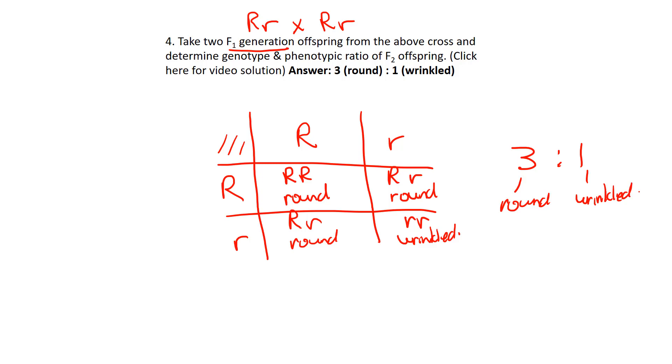So in a previous question or somewhere in the notes there, we talked about this is a very typical ratio when both parents are heterozygous in a monohybrid cross. Three to one ratio. You're always going to see that. So remember some of those patterns.